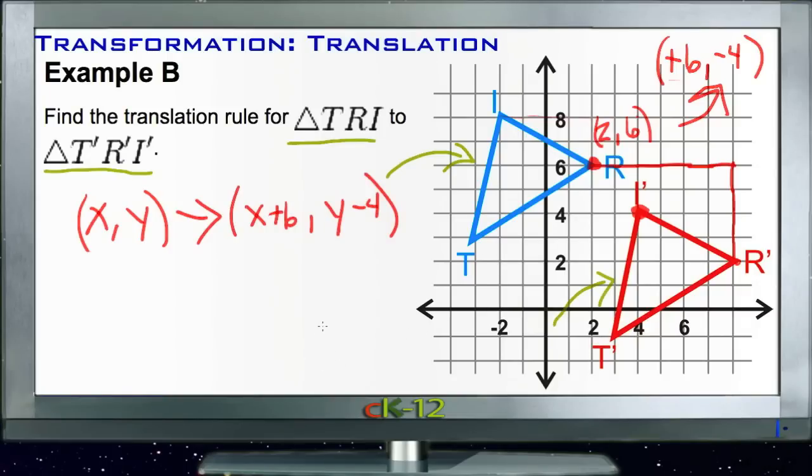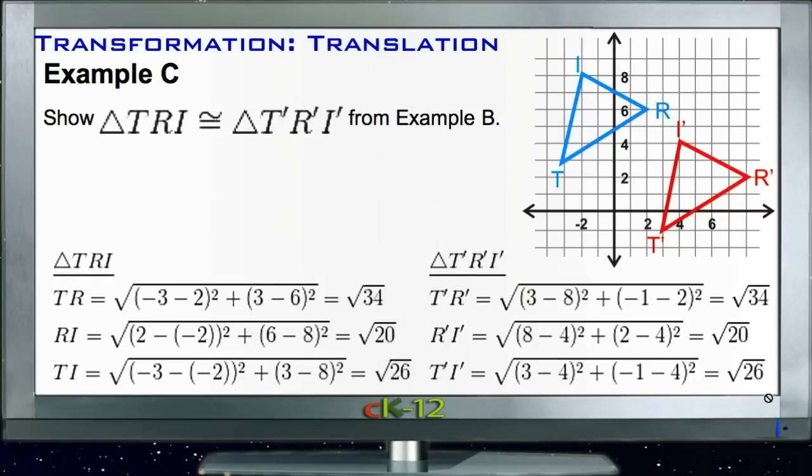Example C says show that triangle TRI from Example B is congruent to triangle T'R'I'. We have our two figures, and what we're going to need to do to see if they're really congruent is measure the three sides. We'd start with, say, point I right here.